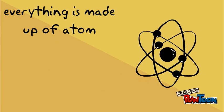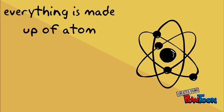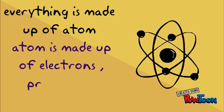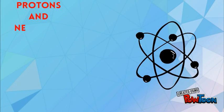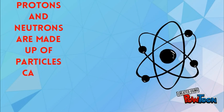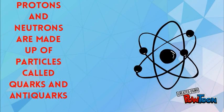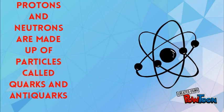Now everything is made up of atoms. An atom is made up of electrons, protons and neutrons. Protons and neutrons are made up of particles called quarks and antiquarks. So from where does the mass of protons and neutrons come?